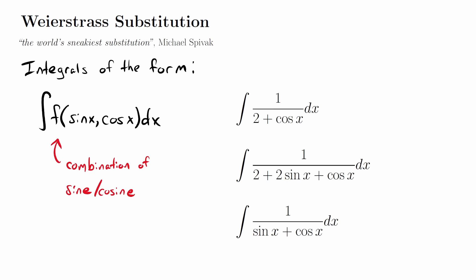Greetings, fellow mathematicians, and welcome back to the Art of Integration. In this video, we're going to take a look at a method called Weierstrass substitution, which as it turns out, is regarded as the world's sneakiest substitution.